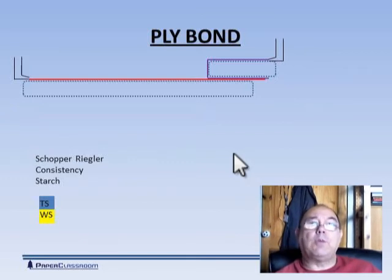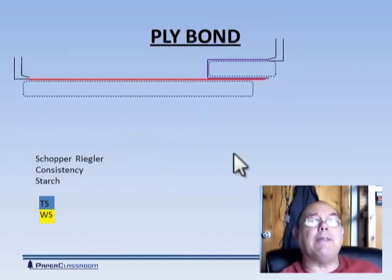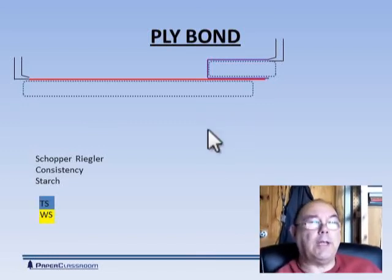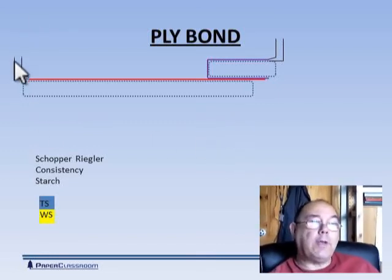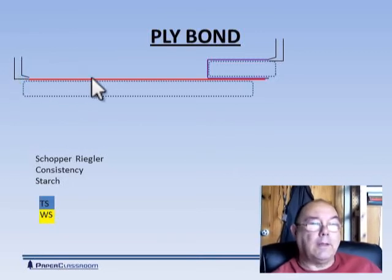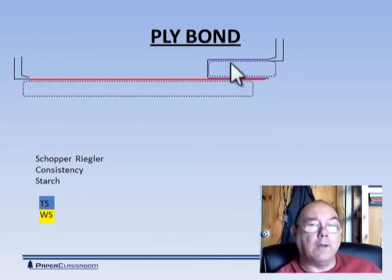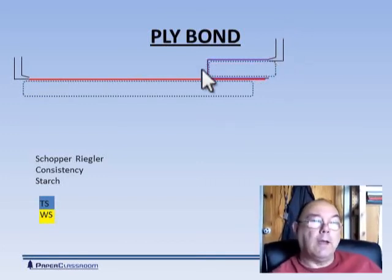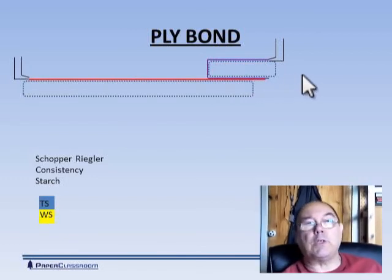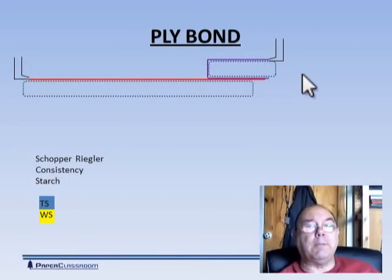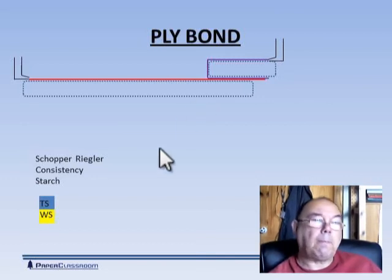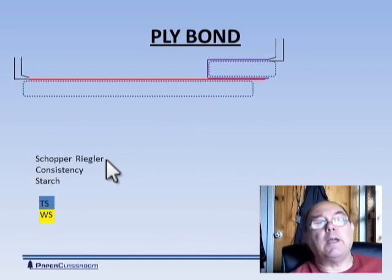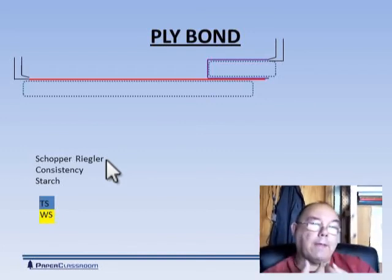The last thing I said we want to talk about was how do these things stick together, all these different plies. So I've given you just a very simple illustration here for a two-ply sheet. So we have the fourdrinier producing with a flow box here producing one sheet, another little fourdrinier there with another type of fiber producing your second sheet. And this comes down here and then the two sheets come together and you've got a very simple two-ply board.